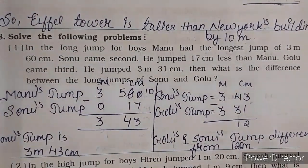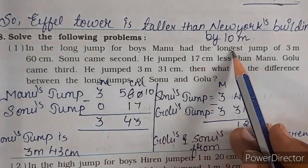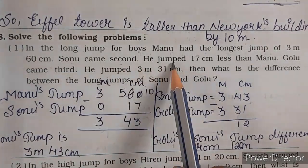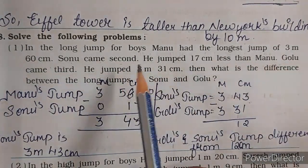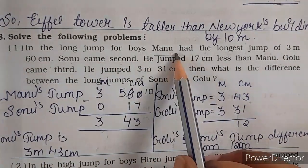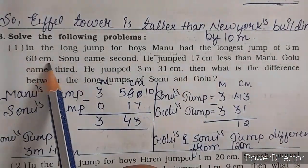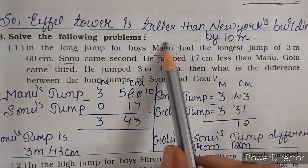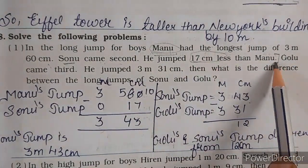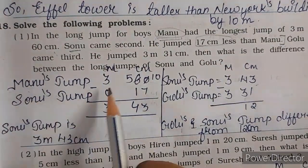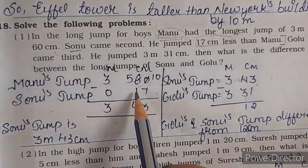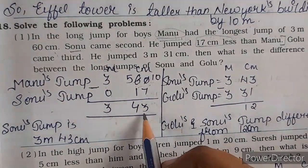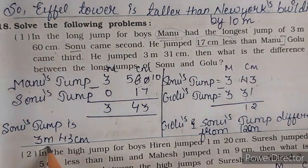Now the next: in the long jump for the boys, Manu had the longest jump of 3 meter 60 centimeter. Sonu came second — he jumped 17 centimeter less than Manu. Manu ki jump 3 meter 60 centimeter thi, so Sonu ki jump usse 17 centimeter kam thi. Hum usme se minus karenge 17, to hamara answer aaya — 3 meter 43 centimeter. So Sonu ki jump kitni hui — 3 meter 43 centimeter.